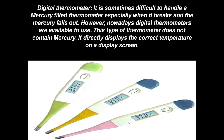There are also newly designed digital thermometers. It is sometimes difficult to handle a mercury-filled thermometer, especially when it breaks and mercury falls out. Accidentally, the thermometer may fall down, the mercury may ooze out and the glass may break. To overcome these disadvantages, nowadays digital thermometers are available. This type of thermometer does not contain mercury. It directly displays the correct temperature on a display screen using sensors.